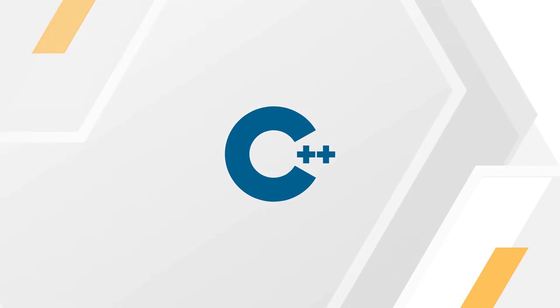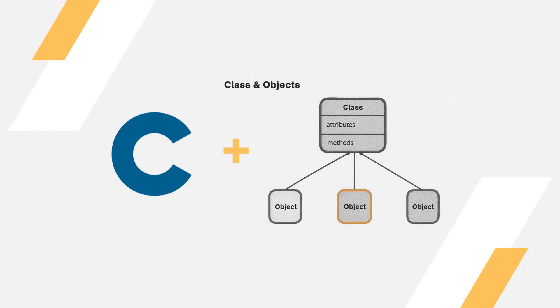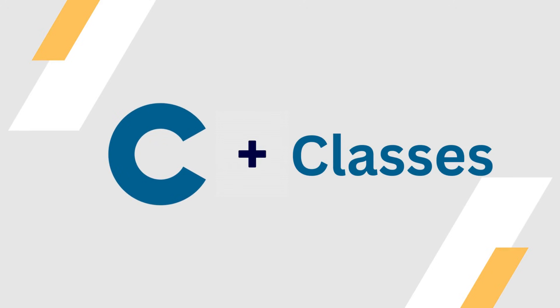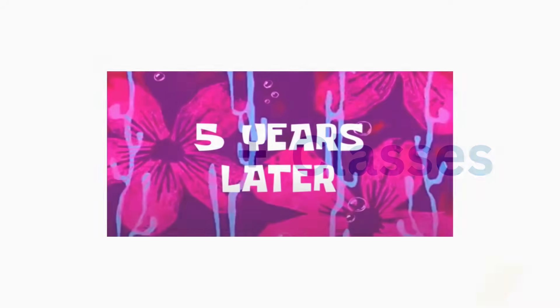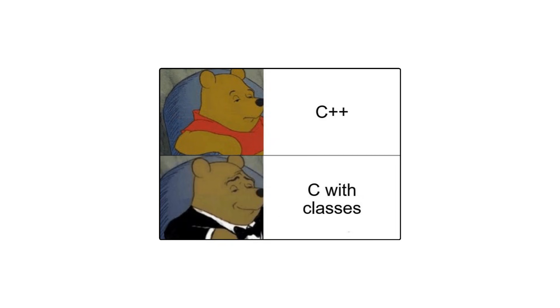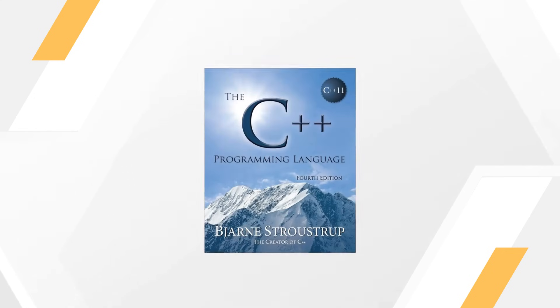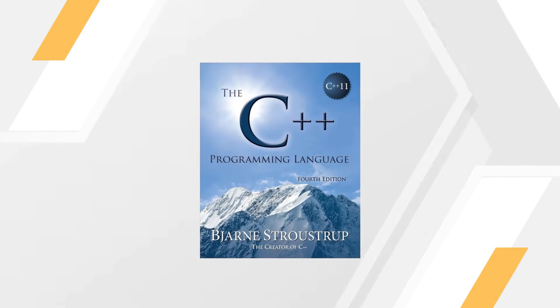Now let's move on to C++. C++ was first developed in 1979 by Bjarne Stroustrup at Bell Labs. At the time, he wanted to add object-oriented programming to the C language, so he called his project 'C with Classes.' A few years later, in 1985, it was officially released to the public as C++, along with his book, The C++ Programming Language.